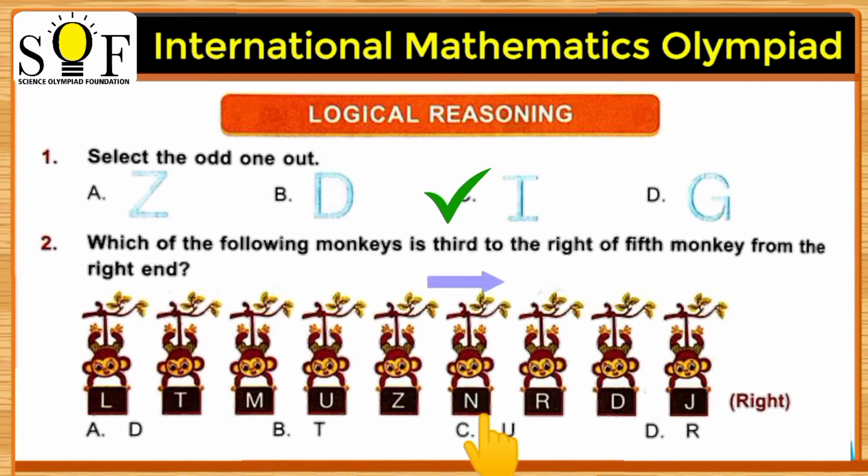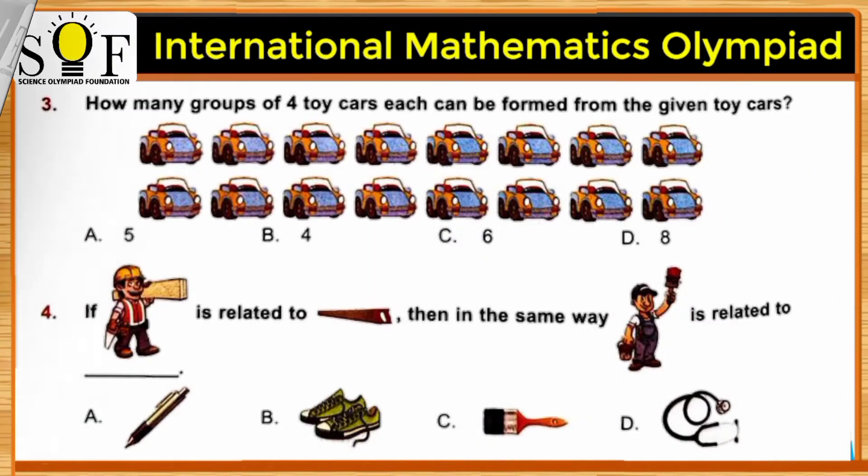That is one, two, and three. Our answer is letter D, that is option A. How many groups of four toy cars each can be formed from the given toy cars?